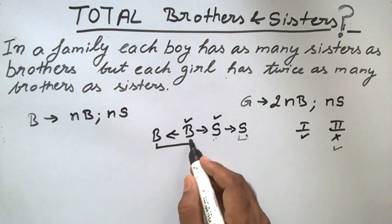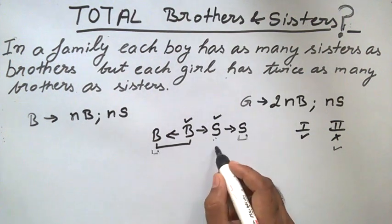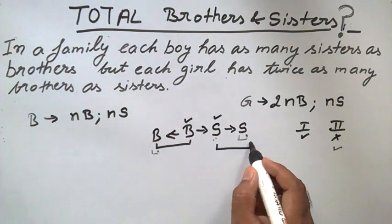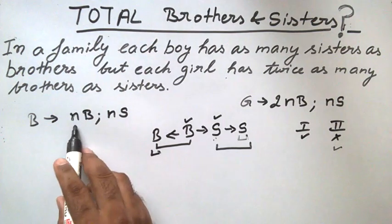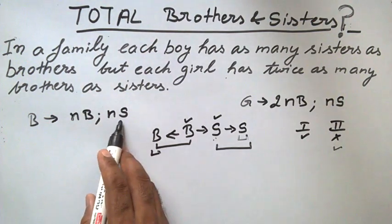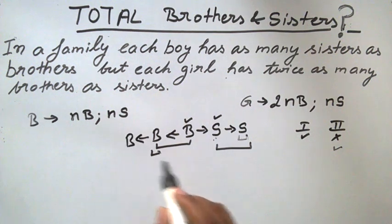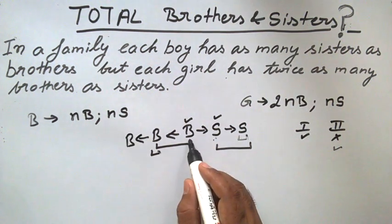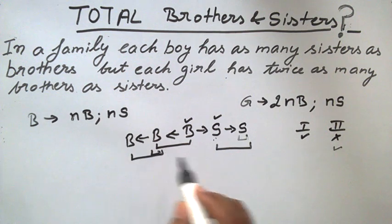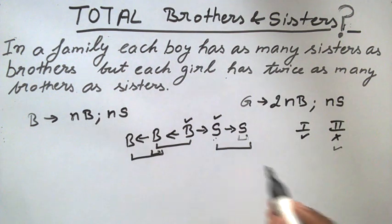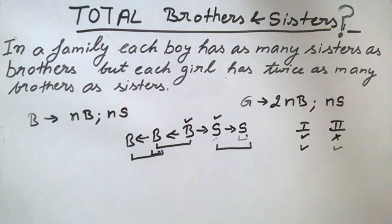For this boy, there is now one brother and two sisters. The first condition requires an equal number of brothers and sisters, so we need one more brother. Now, for this boy, there are two brothers and two sisters — equal numbers — so the first condition is satisfied.